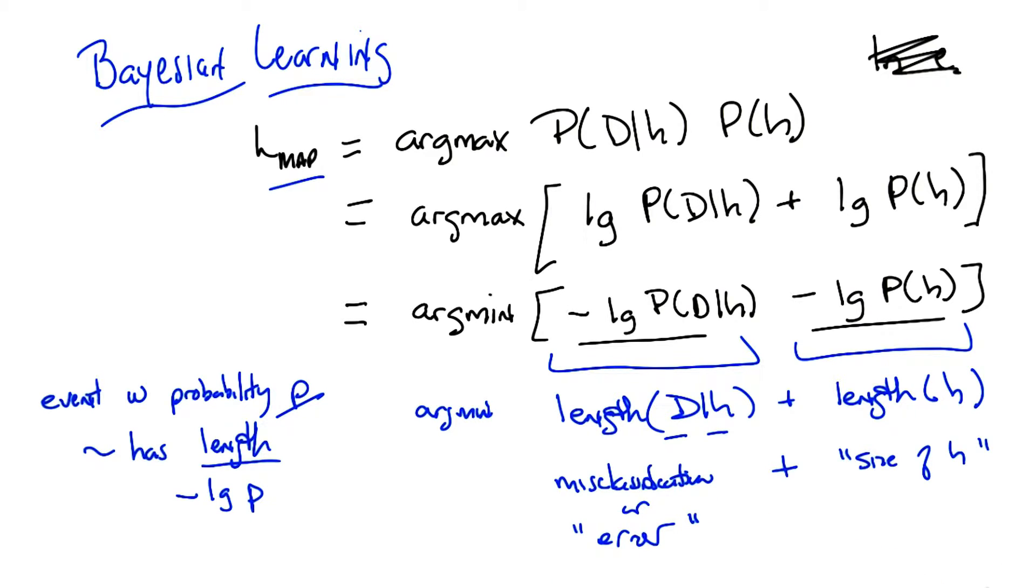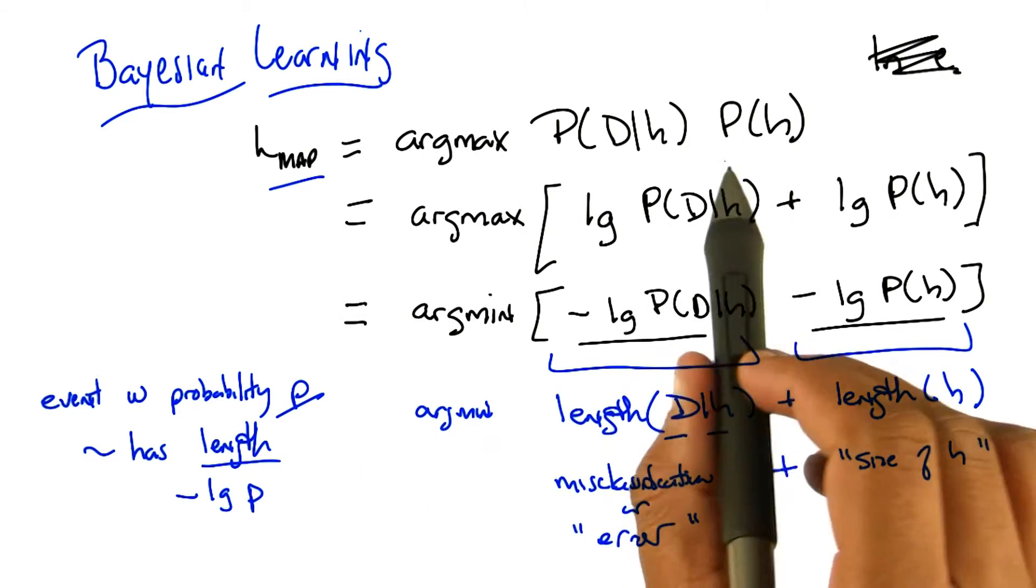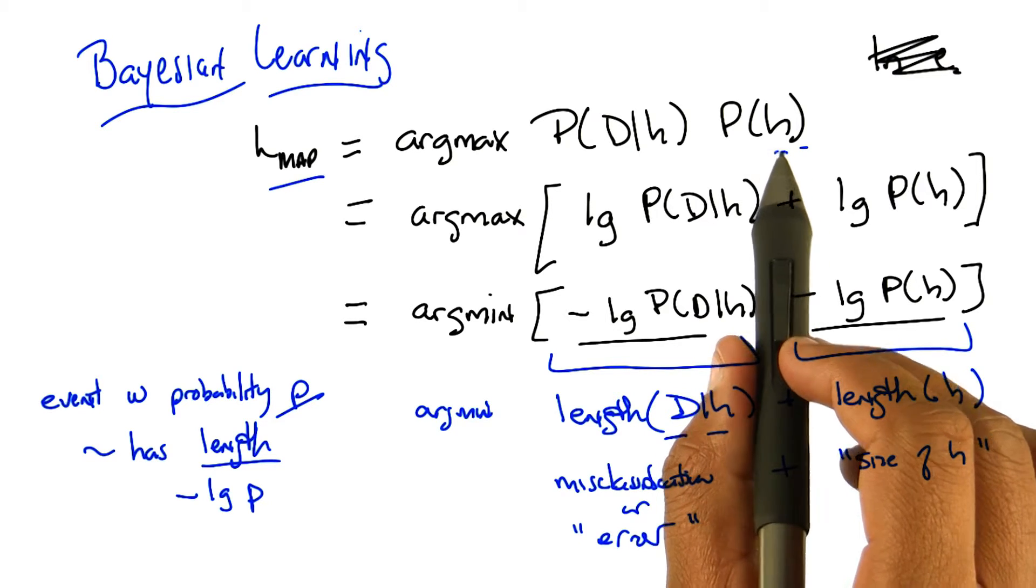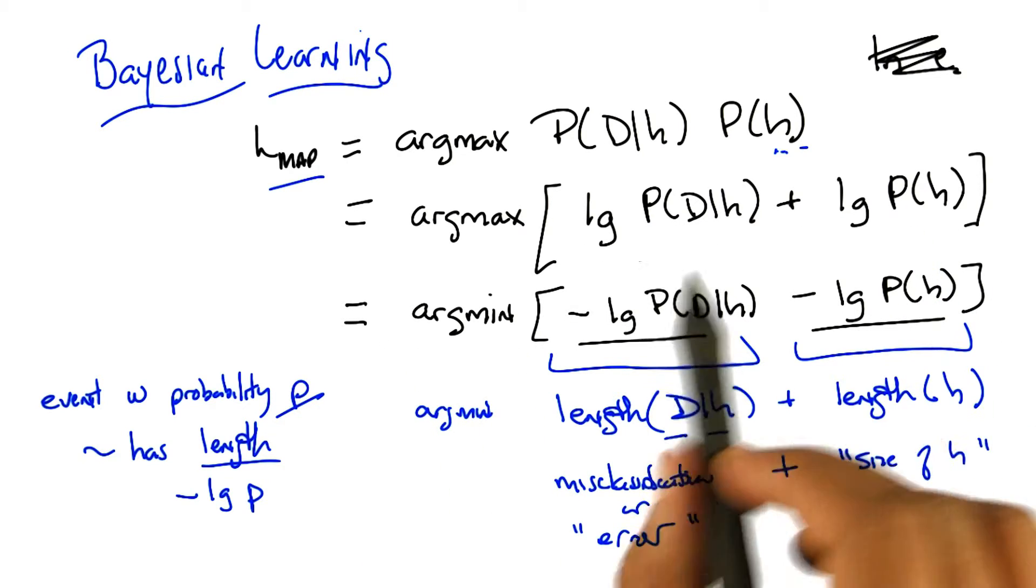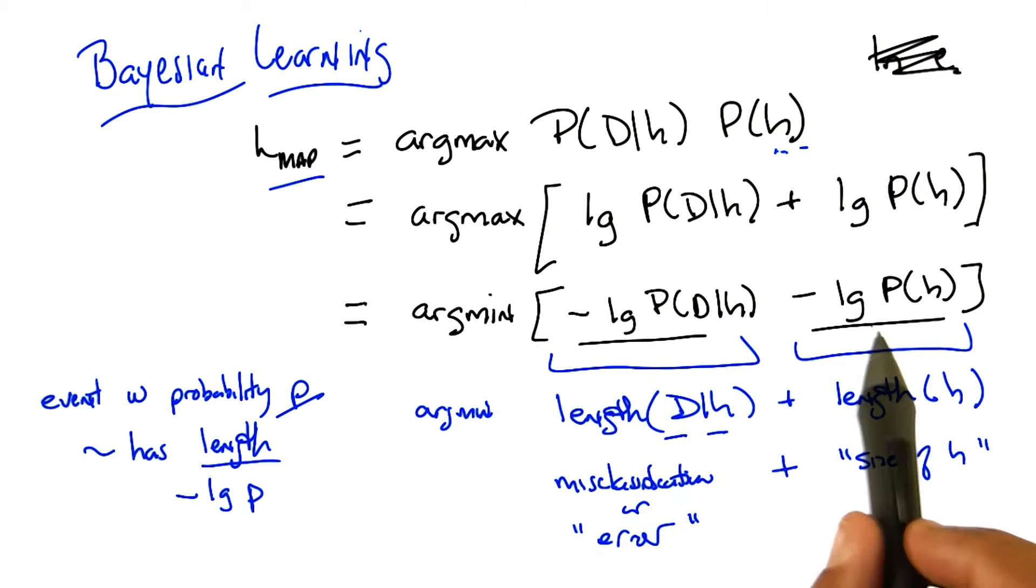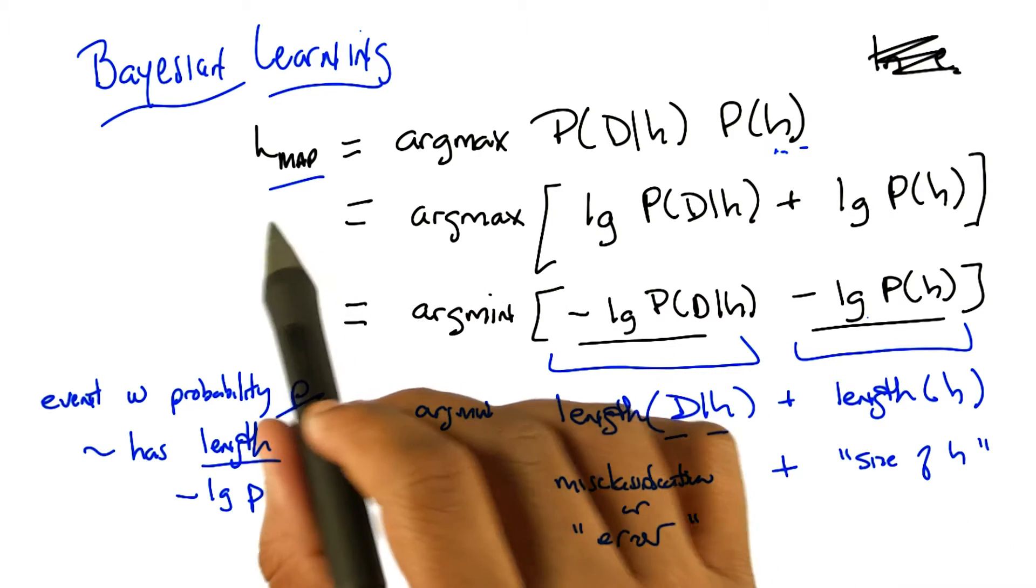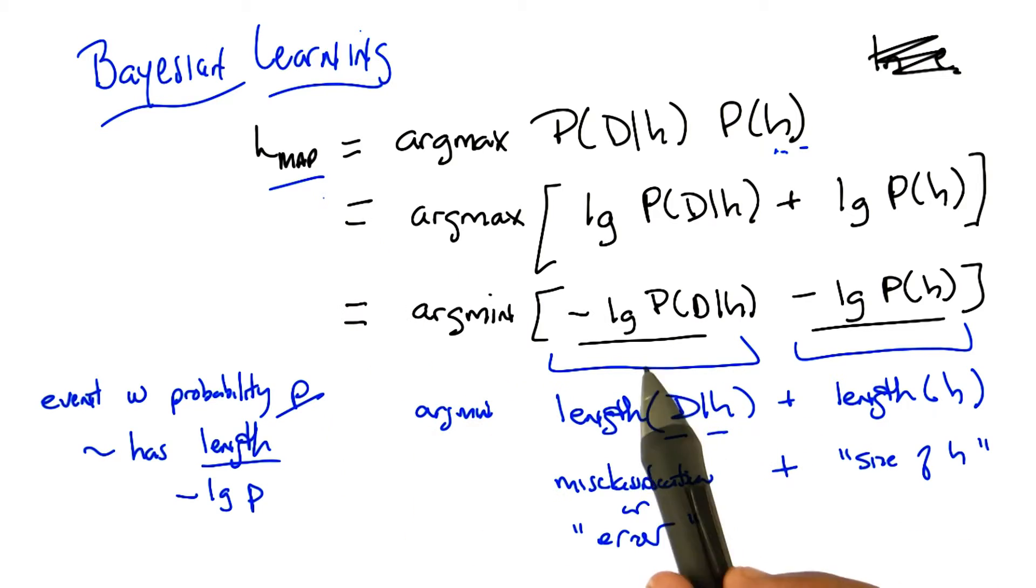So basically, what we're saying is, if we're trying to find the maximum a posteriori hypothesis, we want to maximize this expression. We want to find the h that maximizes this expression. That's the same as finding the h that maximizes the log of that expression, which gives you this. Which is the same as minimizing this expression, which is just maximizing this expression and throwing a minus one in front. But these terms actually have meanings in information theory.